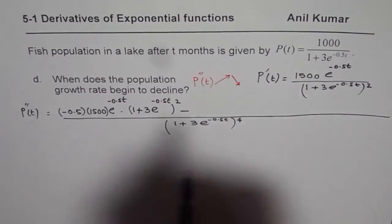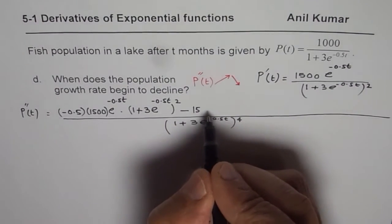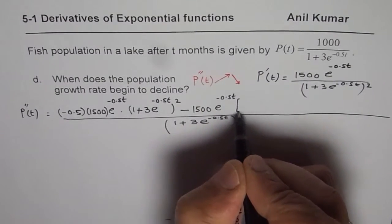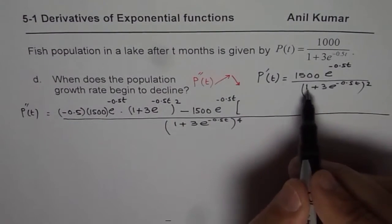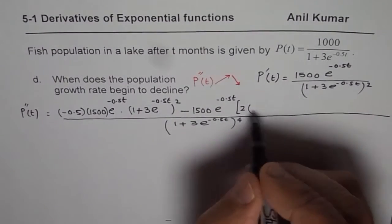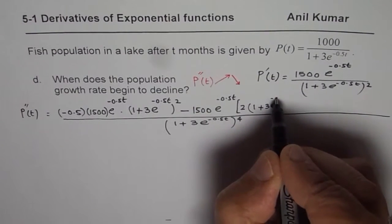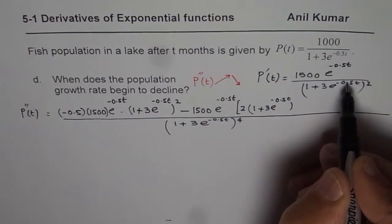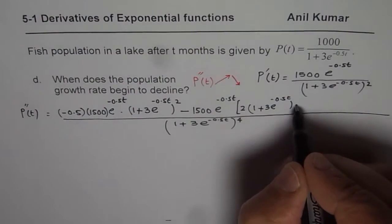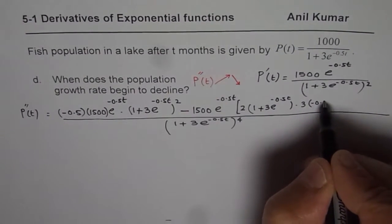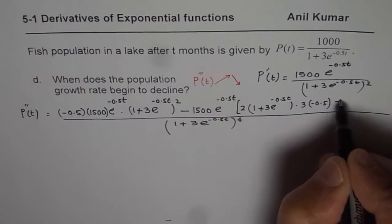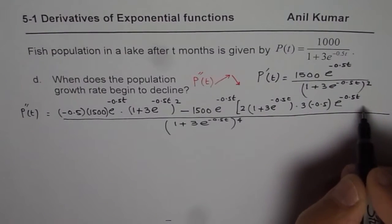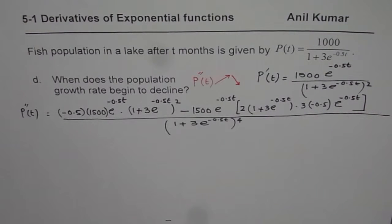Then we subtract the numerator 1500 e to the power of minus 0.5 t times the derivative of the denominator. That means 2 times 1 plus 3 e to the power of minus 0.5 t, times the derivative of the inside function, which is 3 times minus 0.5 times e to the power of minus 0.5 t. So that becomes the second derivative of our function.